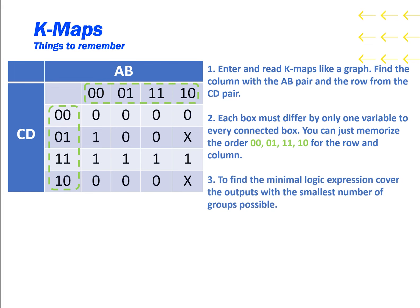To find the minimal logic expression, cover all of the 1 outputs with the smallest number of groups possible. Groups must follow these rules. They must be rectangular, they must contain only the same output, and the area must be a power of 2.